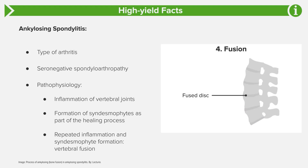Over time, these bones can actually fuse together, resulting in vertebral fusion. This is commonly seen as what's called bamboo spine, where the spinal cord looks like a piece of bamboo because the different bones are being fused together — very high yield. If you imagine the swelling, new bone formation, and fusion, you can understand why you'd see signs of swelling on imaging and fusion over time in ankylosing spondylitis.